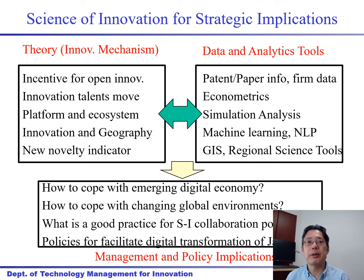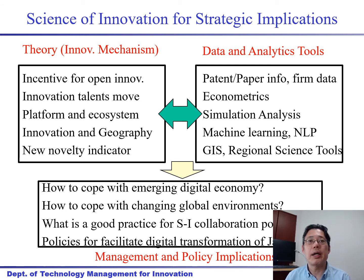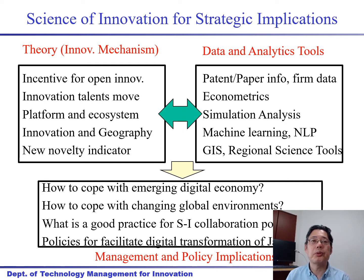There are also topics like what is good practice for science and innovation industry collaboration policy — these have implications for policy makers. We also work on policies to facilitate digital transformation in Japan. Digital transformation is a very important concept right now, but there are many things to worry about, such as organizations, institutions, long-standing business practices, laws, and regulations that sometimes impede getting the fruit out of information technology. These concepts are important not only for companies but for governments to form policy.